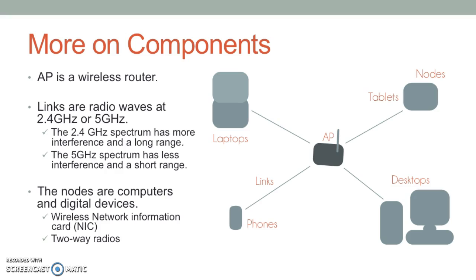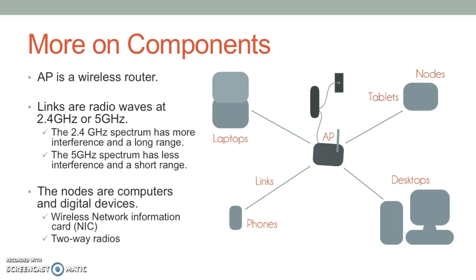Now let's build on these definitions by looking into how we connect in the air. Your access point is a wireless router. It provides access to the internet and other computers on the network. The router is actually wired to a modem that provides internet access, typically through ethernet wires. From this point on, the network becomes wireless. The links are radio waves instead of wires, and they use one or two bands of spectrum: 2.4 GHz or 5 GHz.